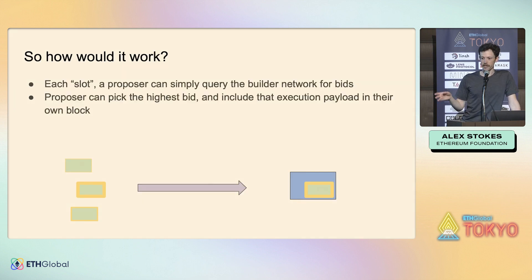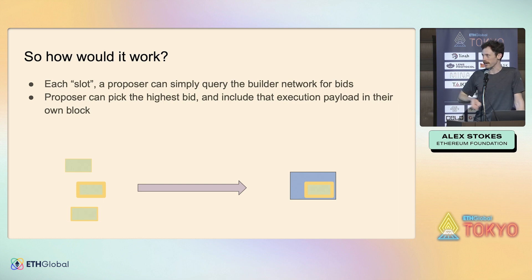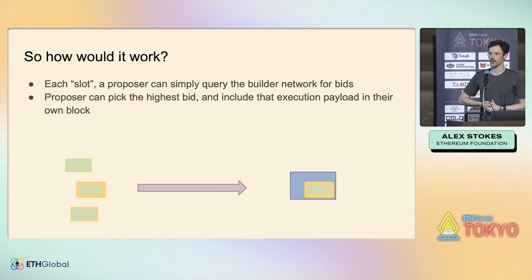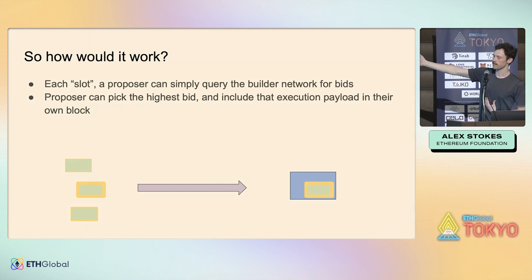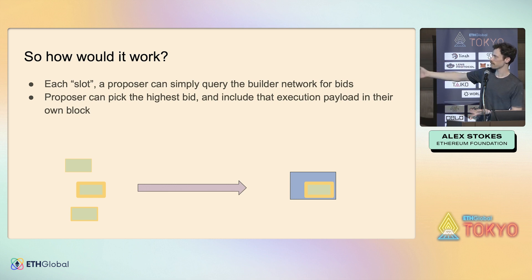The naive approach — if we don't worry about attacks — is that as a proposer I know where all the builders are because they told me ahead of time. Every slot I say give me your best block, they do so, and if I'm revenue maximizing I pick the most valuable one — the one with the highest bid — and move on.